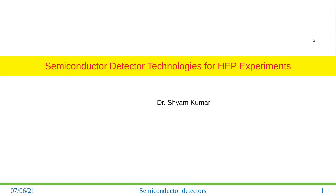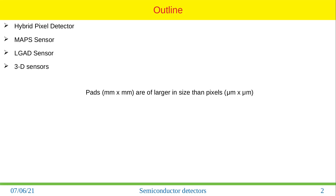In this video I will talk about semiconductor detector technology for high energy physics experiments. There are several technologies: one is hybrid pixel detector, which is extensively used by many experiments. Currently there are several technologies under development, like MAPS — monolithic active pixel sensors — and also LGAD technology, which is low gain avalanche detectors, and 3D sensors.